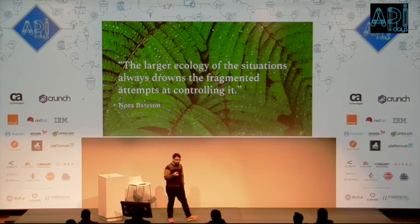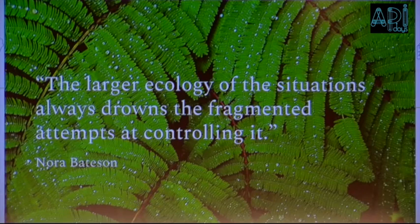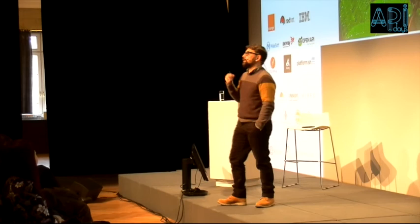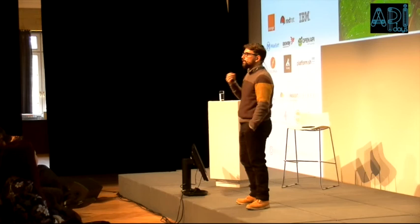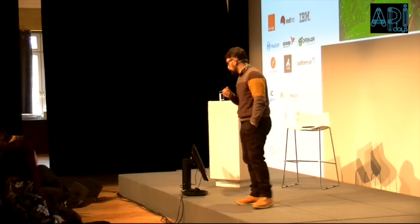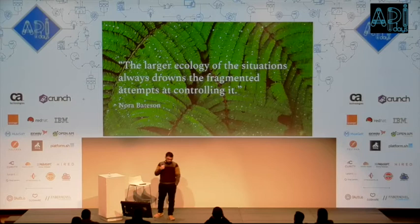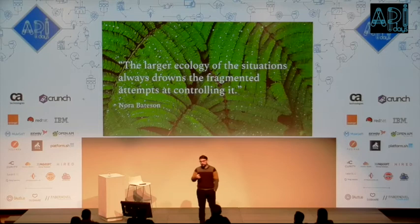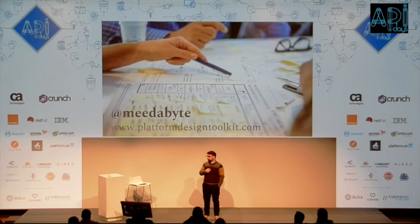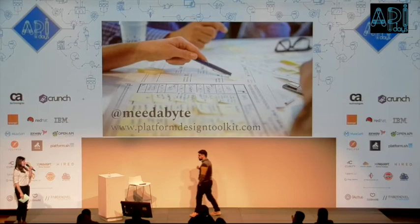Everything is going to change. You need to embrace complexity. I want to stop this presentation quoting Nora Bateson, who is really good at giving you this understanding. Basically, you want to stop thinking as a rational entity, stop thinking in terms of industrial policies. You need to start asking questions, start nurturing conversations, and start thinking about how interconnected your company can be and how to improve this connectivity. As Nora says, the larger ecology of the situation will always draw on your ability to control it, not to define it in a rational way. That's everything for me today — thanks for your time and attention.